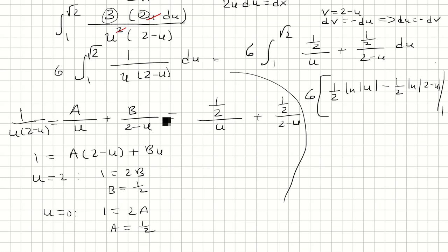And then we're going to evaluate this from 1 to square root of 2. But the first thing we could do before we do that is just distribute the 6. So we have 3 ln absolute value of u minus 3 ln absolute value of 2 minus u.